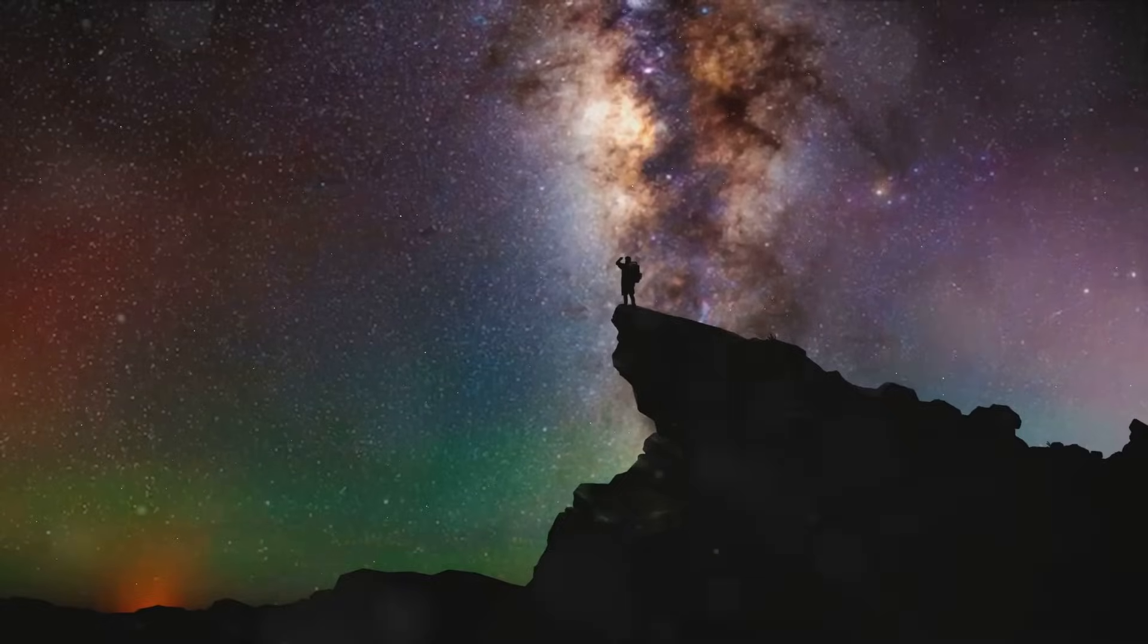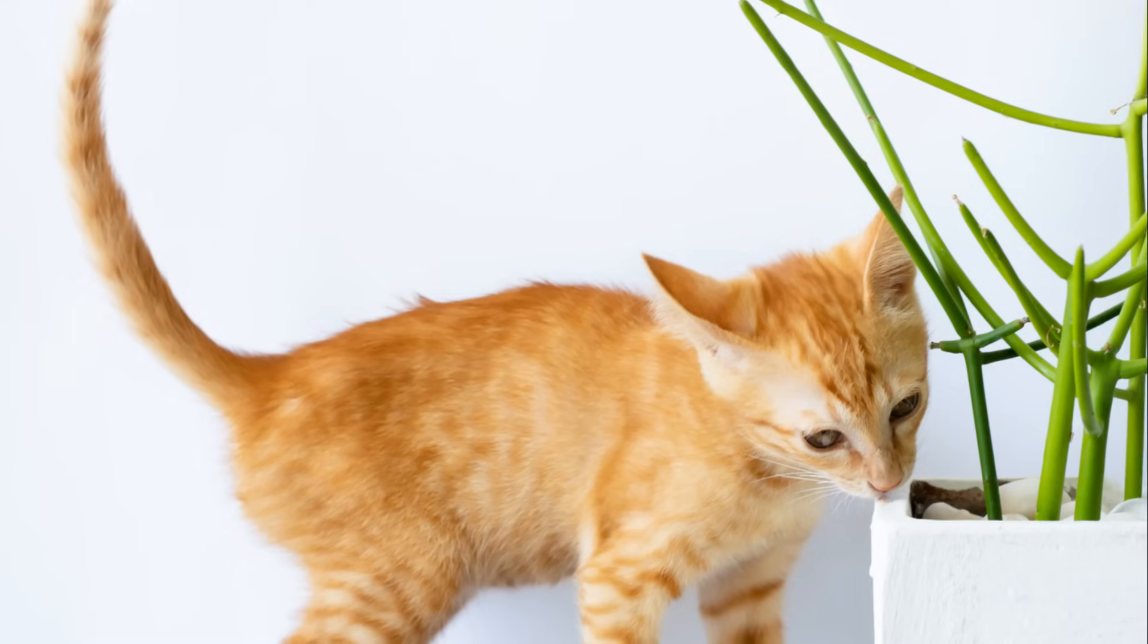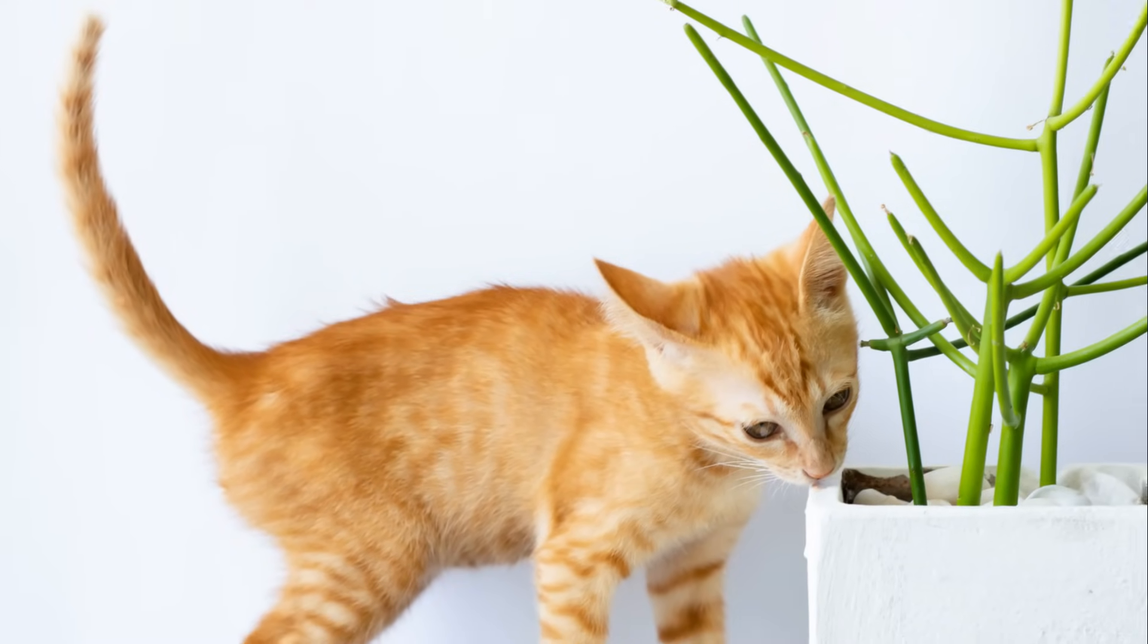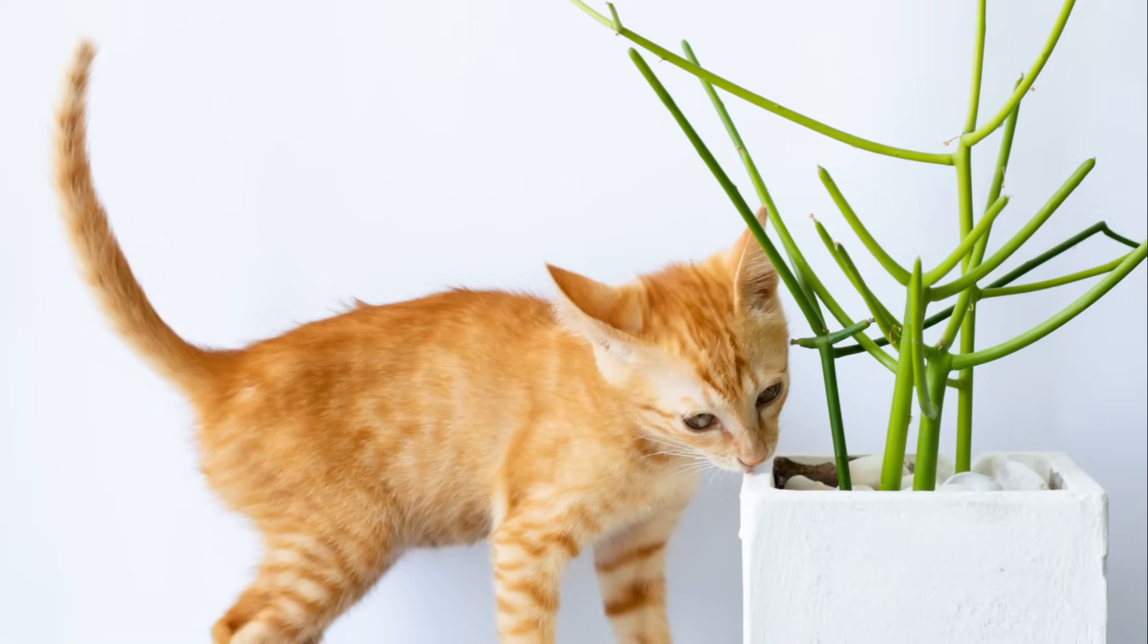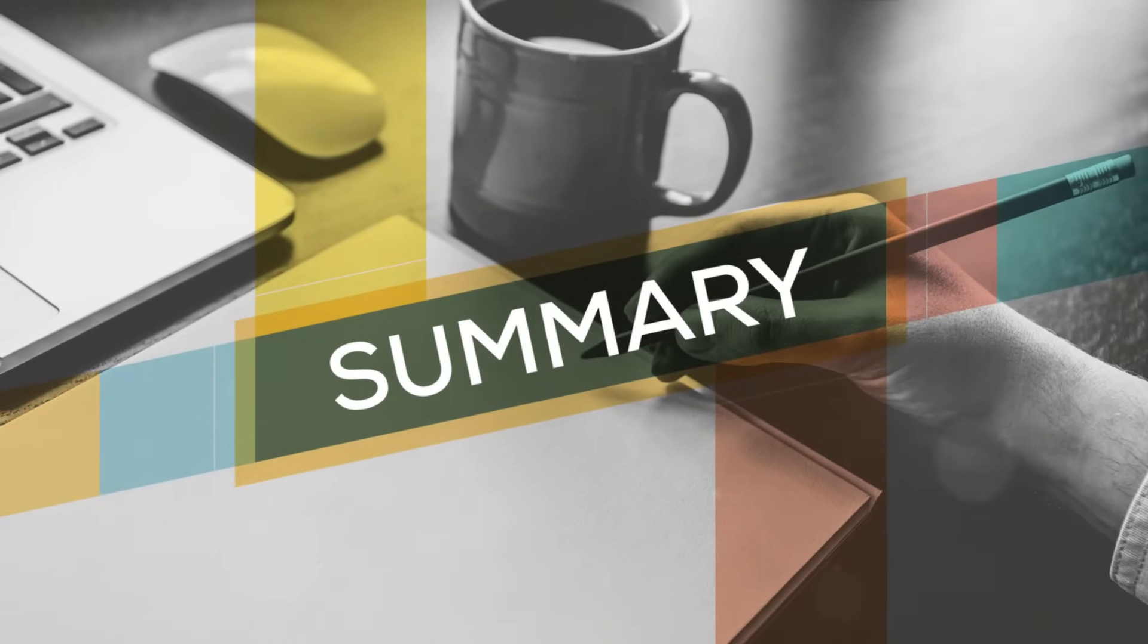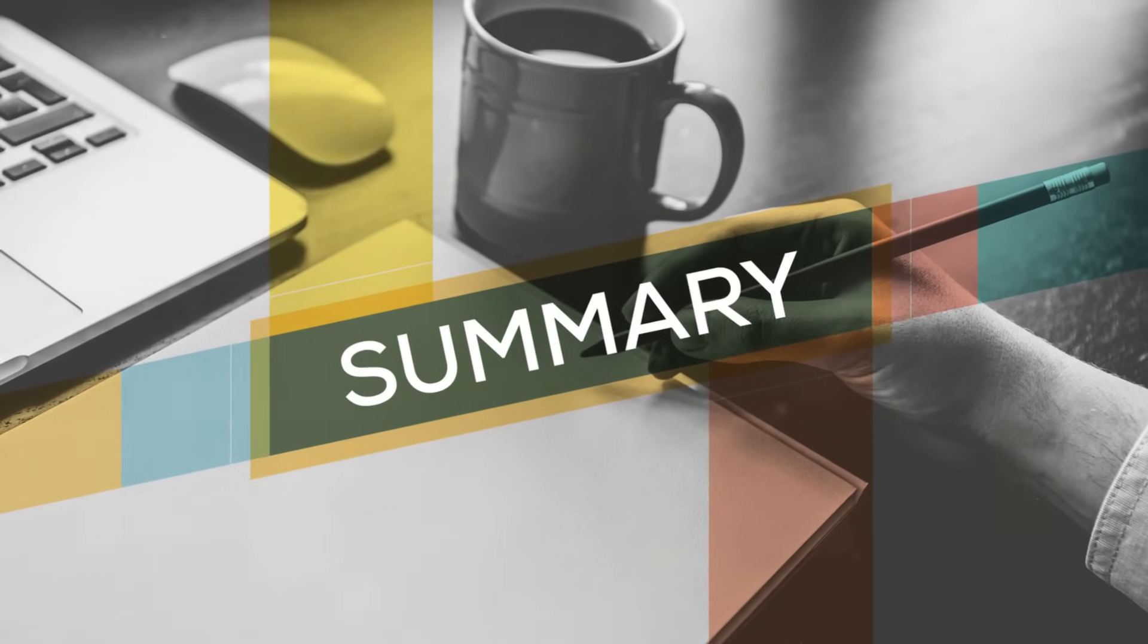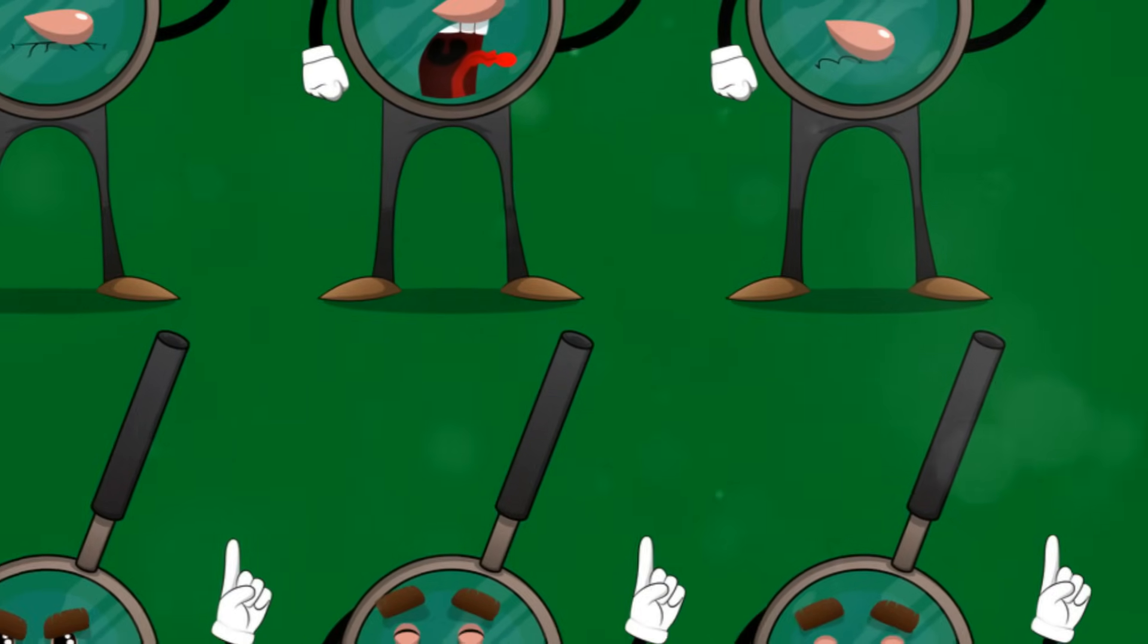But where do we go from here? What does the future hold for our species? These are questions that stir a sense of uncertainty, curiosity and excitement. The truth is, we don't know. We don't know what we'll look like a million years from now. We might remain as we are, or, evolve into something completely different. Perhaps we'll sprout wings and take to the skies, or grow gills and return to the sea. The possibilities are endless.